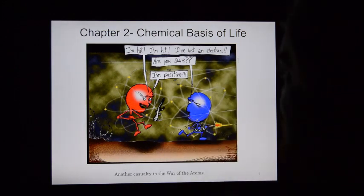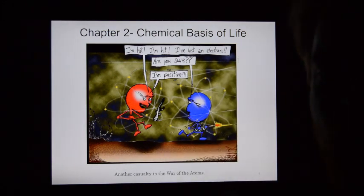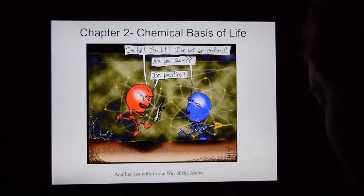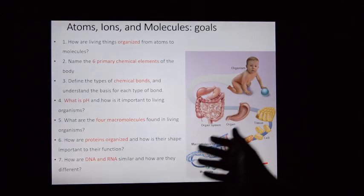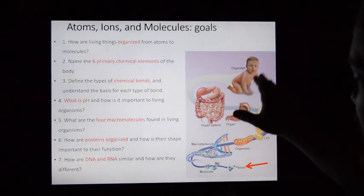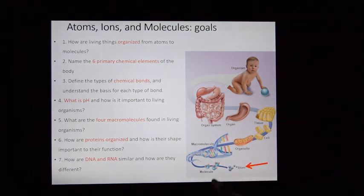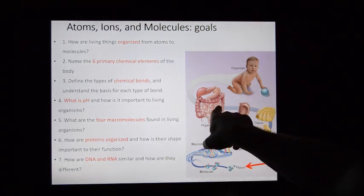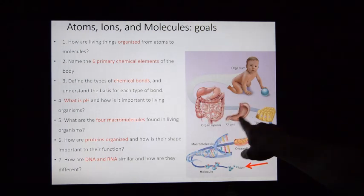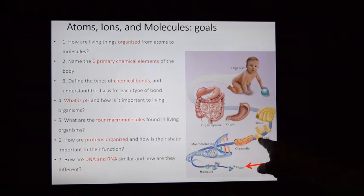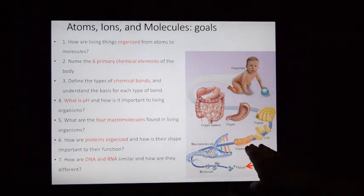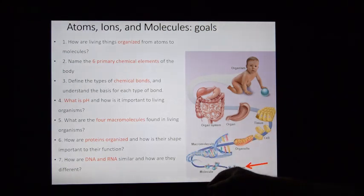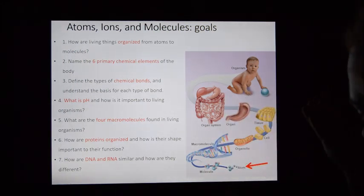Let's do chapter two, the chemical basis of life. As you probably recall, I've talked about the hierarchy of complexity: you are an organism made up of several organ systems, those organ systems made up of multiple organs, those organs made up of multiple tissues, those tissues made up of multiple different types of cells, those cells made up of multiple organelles, organelles made up of multiple different macromolecules, and those macromolecules being made up of smaller molecules — eventually getting down to the concept of the atom.